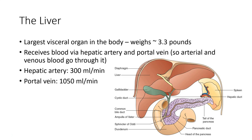The liver is the largest visceral organ in the body, weighing around 3.3 pounds. Note that the liver receives blood from the hepatic artery, so it receives arterial blood, and also through the portal vein, so venous blood will also go through it.